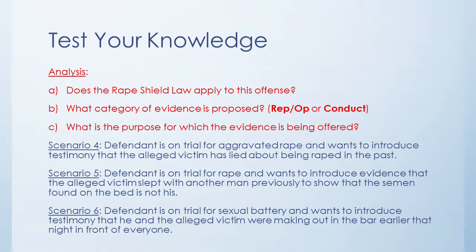Scenario four: defendant is on trial for aggravated rape and wants to introduce testimony that the alleged victim has lied about being raped in the past. This one is more interesting. Looking at specific instances of conduct, number two is evidence offered on the issue of credibility of the victim. The Rape Shield Law will prohibit this unless the prosecutor or the victim opens the door to it. That's the kind of evidence you have waiting in your pocket — if the stars align, maybe it becomes admissible based on certain actions they take at trial. So that's sort of a 50-50.